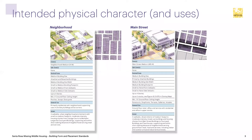That information gets summarized into intent statements that we talked about in the last session — they're qualitative statements about the building size and whether or not they're attached or detached, the size of the setbacks, maybe the overall number of stories, and maybe the ground floor has a particular height that needs to be maintained to maintain the physical character in an area, and the kind of frontages — porches, stoops, door yards, or other types of frontages that make a particular character.